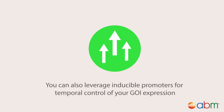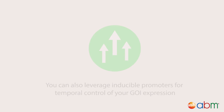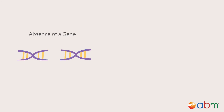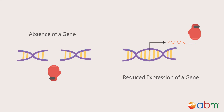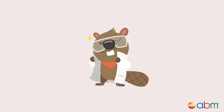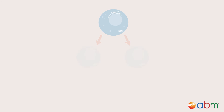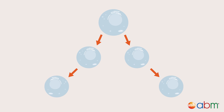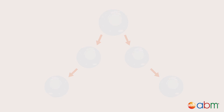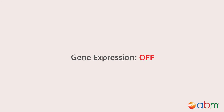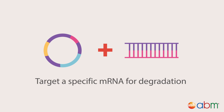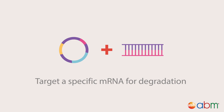You can also leverage inducible promoters for temporal control of your GOI expression. With the absence of a gene or reduced expression of a gene, one can still assess the effects on cellular pathways, what disruptions occur with the absence of the gene function, the effects on cell growth, function, regulation, and biomechanisms. To inhibit expression of a certain gene or protein, you can utilize plasmids driving the expression of siRNA to target a specific mRNA for degradation, thereby inducing gene silencing.